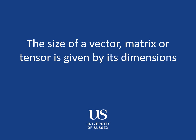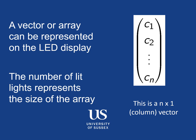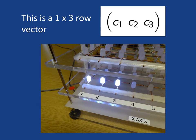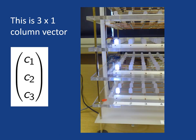So the size of a vector, matrix, or tensor is given by its dimensions. And we can represent that on the LED array in the demonstration mode. So for example here I've got three LEDs lit up. This is actually an example of a one by three row vector. We can also set it up so there's still three LEDs lit up but they're in the vertical direction. So this is an example of a three by one column vector.